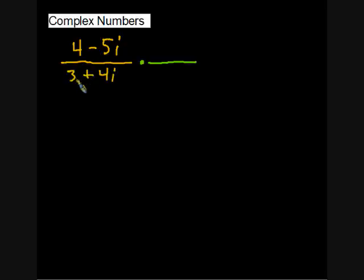The complex conjugate of a complex number is simply the same complex number with a different middle sign. So instead of 3 plus 4i, we'll write 3 minus 4i. That's the complex conjugate.